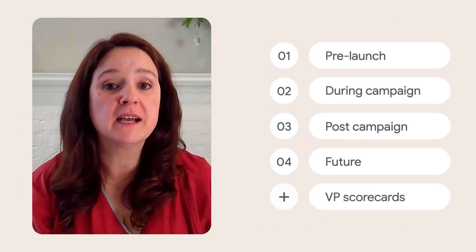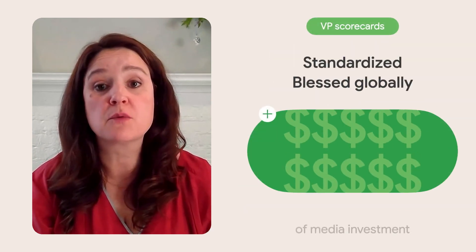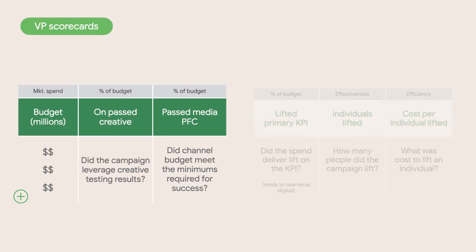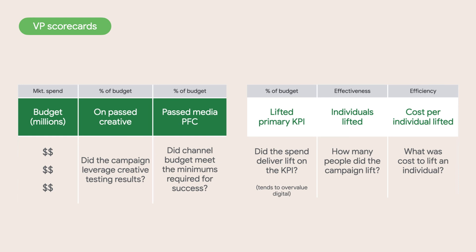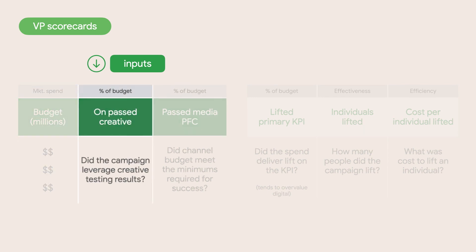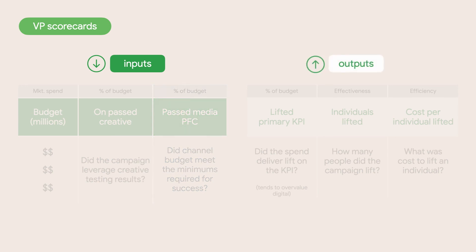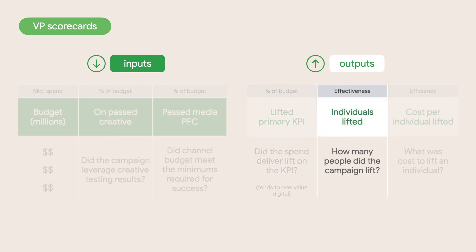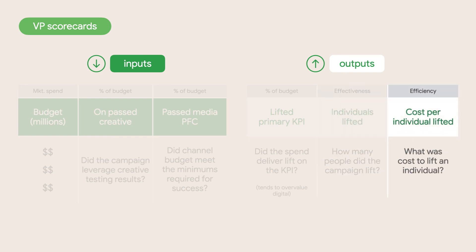KEITH WASHINGTON: So with all this data, how do you keep all the senior stakeholders informed? AMAYA GARBAYO: We have a scorecard that summarizes everything with only six metrics. The metrics have been standardized and are blessed globally to represent 100% of the investment. That gets delivered to our CMO and most senior leaders every quarter. Three metrics are evaluated before the campaign starts: the budget, the percent of budget behind pass creative, and the percent of budget passing pre-flight check. Then we look at three metrics after the campaign concludes: the percent of budget that lifted the primary KPI, one effectiveness metric using the number of individuals lifted, and one efficiency metric — the cost per individual lifted.